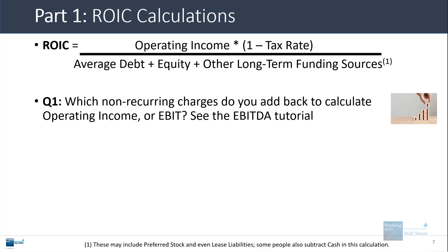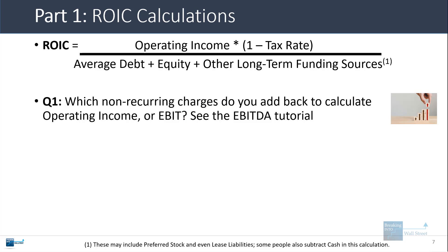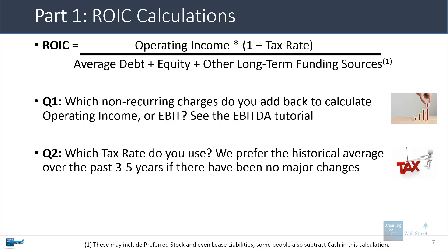First, which non-recurring charges do you add back to calculate operating income or EBIT? We covered this in the EBITDA tutorial, but in short, we recommend being conservative and not adding back a lot unless something really stands out as a true non-recurring charge that has only happened once in the past 5 to 10 years. For the tax rate, we prefer to use the simple historical average over the past 3 to 5 years. If you get something like a negative 20% or 75% tax rate, you might just use the corporate statutory tax rate in the company's country.